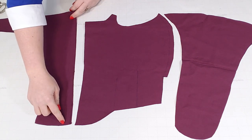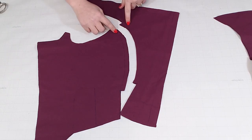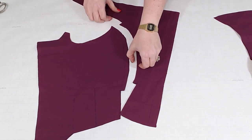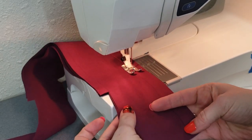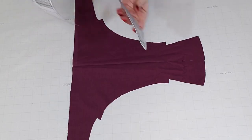I'll sew that center back seam first, but the side seam can wait a little bit, since it's going to be trickier with this curve. After the back seam is ready, I can work on all these boning channels.